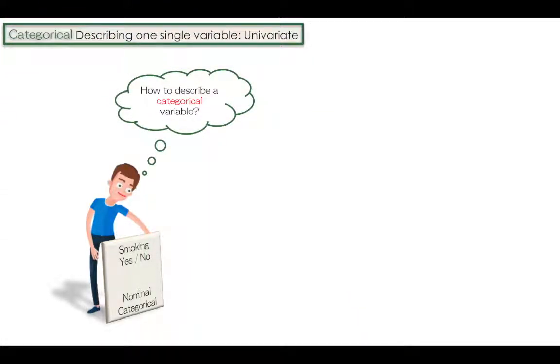Imagine in a research we had a question regarding smoking with the possible answers yes or no, which makes this variable a dichotomous nominal categorical variable. Dichotomous means two subcategories. Dichotomous data, also known as binary data or attribute data.